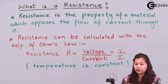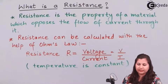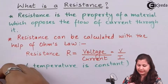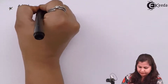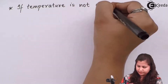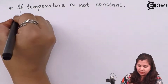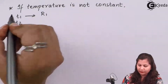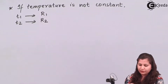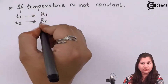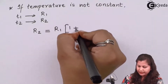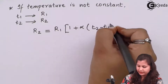Through Ohm's law we can calculate the resistance by dividing voltage by current, R equals V by I. Now when temperature is not treated as a constant entity, suppose T1 is the initial temperature and T2 is the final temperature. At T1 we have resistance R1, and at T2 we have resistance R2. The resistance R2 can be calculated by the formula: R2 equals R1 times (1 plus alpha times (T2 minus T1)).